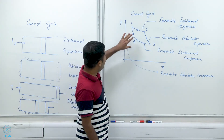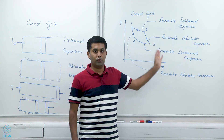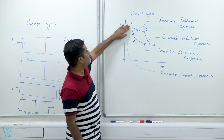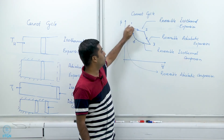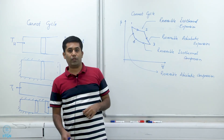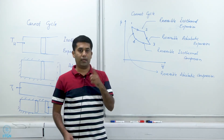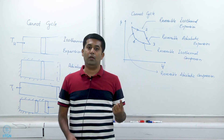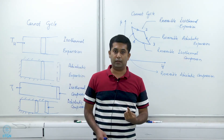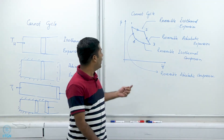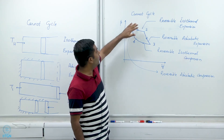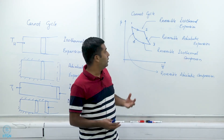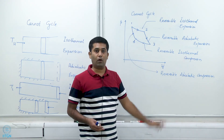We can also run this cycle in reverse — instead of going 1→2→3→4→1, we go 1→4→3→2→1, following the cycle in the anticlockwise direction. When we do that, we get a reversible reverse Carnot cycle, essentially a Carnot refrigeration cycle. So if a heat engine runs on a Carnot cycle it follows the forward direction, while a refrigerator or heat pump running on a Carnot cycle follows the same cycle but in the counter-clockwise direction.